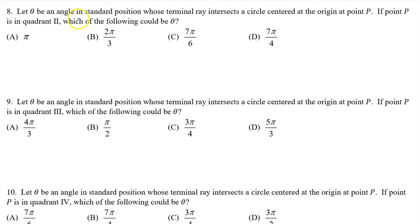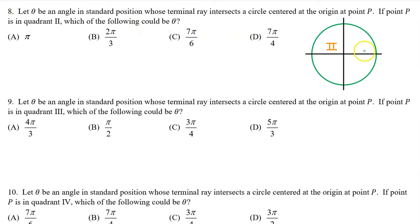Number 8. Let theta be an angle in standard position whose terminal ray intersects a circle centered at the origin at point P. If point P is in quadrant 2, which of the following could be theta? We have memorized that halfway around is pi radians — that's right on the negative x-axis, which is neither in quadrant 2 nor in quadrant 3. So answer A is out. Thinking of pi as 3pi over 3, 2pi over 3 is one multiple before this, which does fall in quadrant 2. So the answer is B.